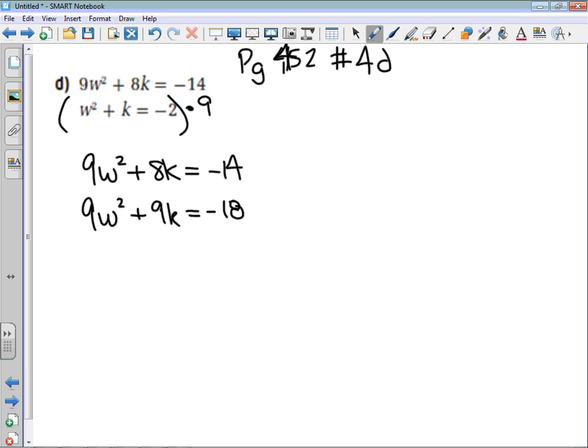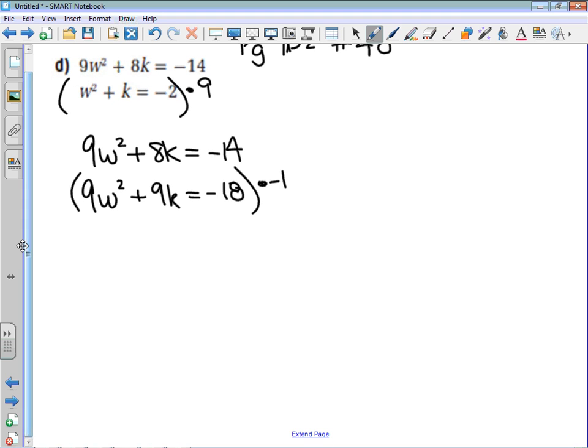Now I do want to show you a little trick because sometimes, you know, subtracting equations can be a little bit tricky. If I want to do this via addition, then what I have to do is one extra step. And I'm just going to multiply that second equation by negative one. And what that's going to give me, I haven't touched the first equation. So that's still 9w squared plus 8k is equal to negative 14. But now my second equation is negative 9w squared minus 9k is equal to positive 18.